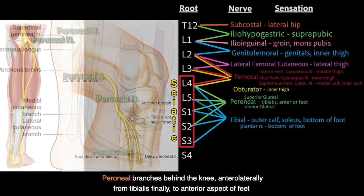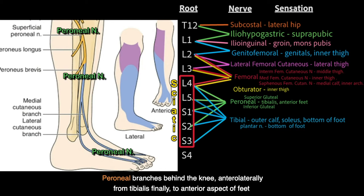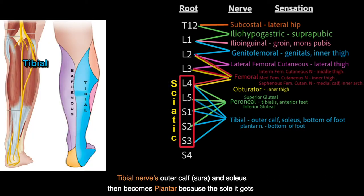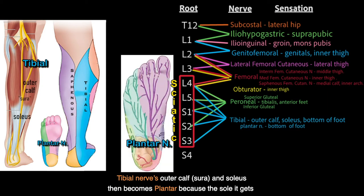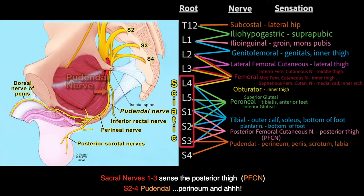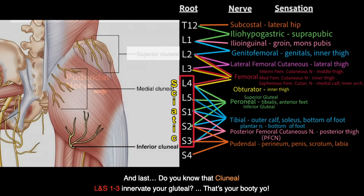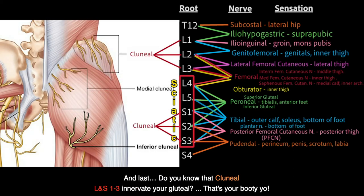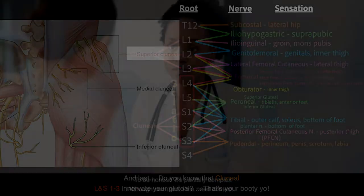Peroneal branches behind the knee, anterolaterally from tibialis, finally to anterior aspect of feet. Tibial nerve: outer calves — sural and soleus — then becomes plantar. Sacral nerves S1 to S3 since the posterior thigh. S2 to S4's pudendal — perineum and eye. And last, do you know that cluneal nerves L1 to L3 innervate your gluteal — that's your gluteal contact.